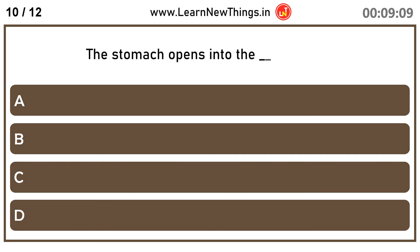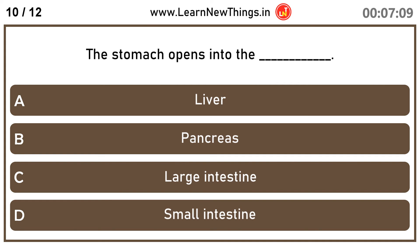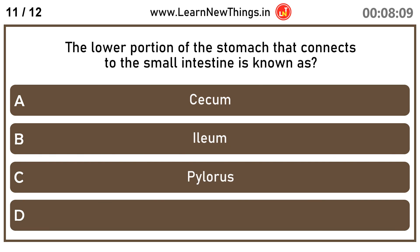The stomach opens into the dash. Small intestine. The lower portion of the stomach that connects to the small intestine is known as? Pylorus.